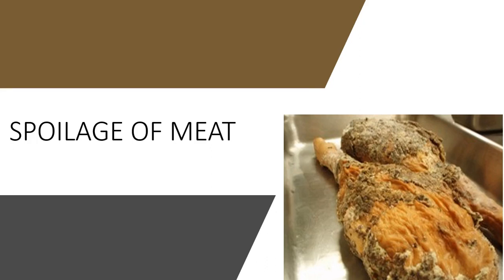In this part we are going to discuss the spoilage of meat and spoilage of fish. In other parts we have already gone through the food spoilage introduction, spoilage of vegetables and spoilage of fruits. Food that is not going to be fit for human consumption is called spoiled food. So if the meat is not fit for consumption, we call it spoiled meat.